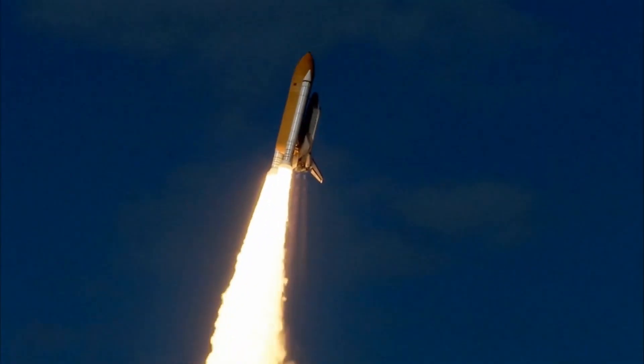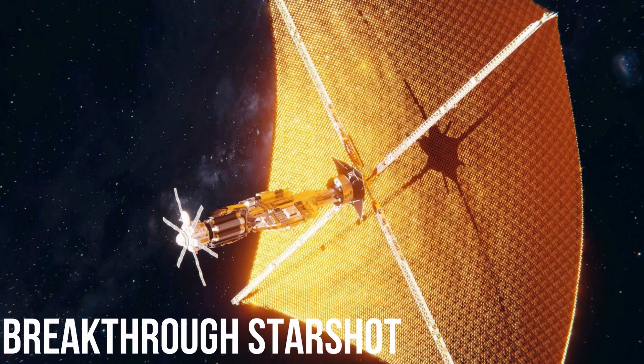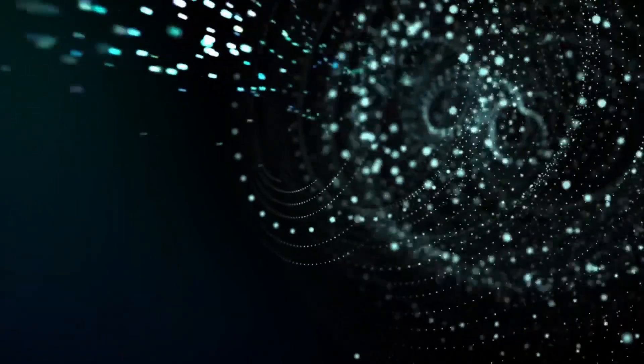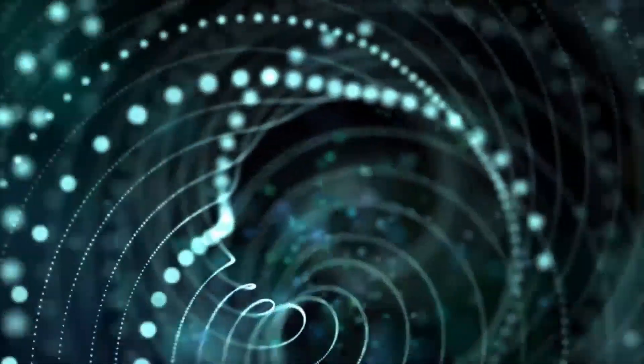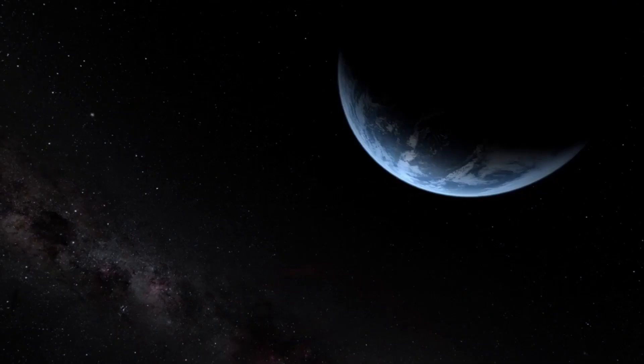As of today, manned missions are impossible, but a project called Breakthrough Starshot, supported by billionaire Yuri Milner, is being worked on to create nanoprobes that travel at 20% of the speed of light to visit our neighbor Proxima Centauri.